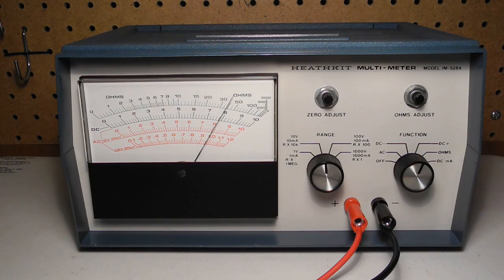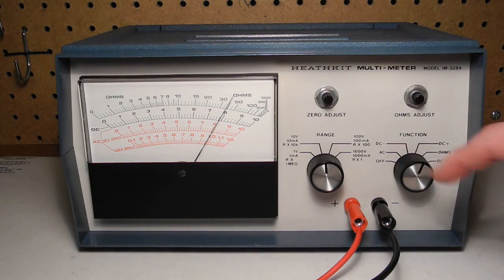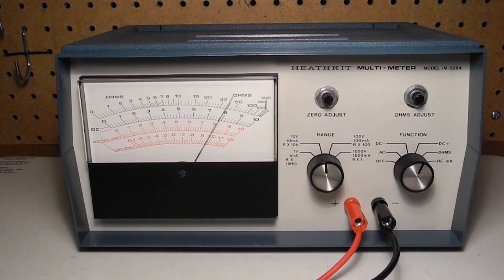The meter is on the 10 volt range and reads about 8 volts. If we want to measure a negative voltage, you can switch to the DC minus function or switch the test leads provided that the meter and the unit under test are not both grounded.